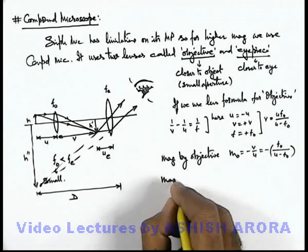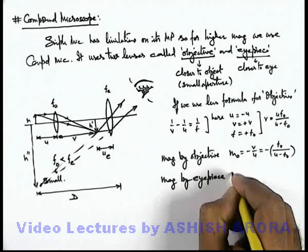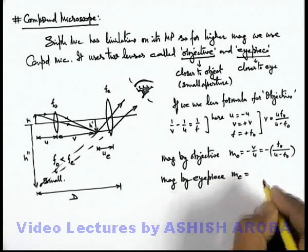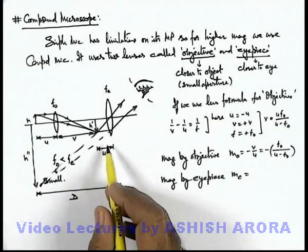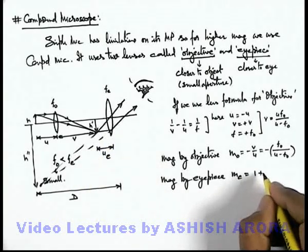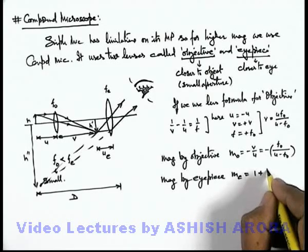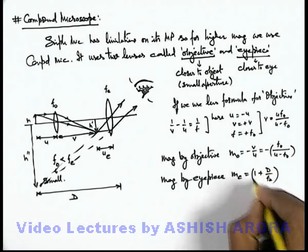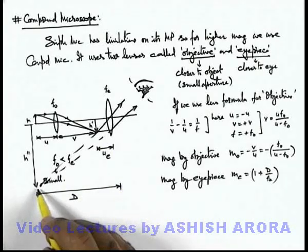If we talk about the magnification by the eyepiece, in the situation where the final image is produced at distance D — as we already studied in the case of the simple microscope — the magnification is given as 1 + D/f. So in this situation the magnification produced by the eyepiece can be directly written as 1 + D/f_e.